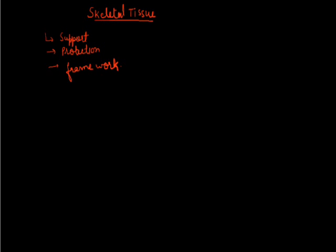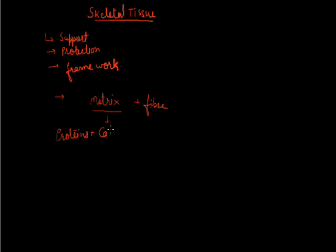The skeletal tissue is a connective tissue, so it is made up of two kinds of substances. The first one is matrix and another one is fiber. Matrix is made up of different proteins along with some specific depositions like calcium phosphate, calcium carbonate, etc. In these substances, cells and fibers are embedded.